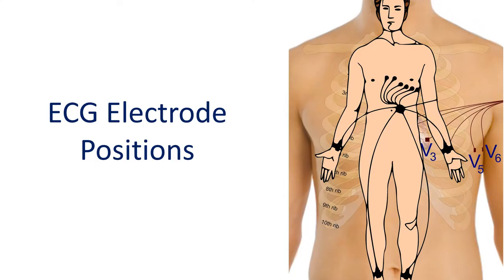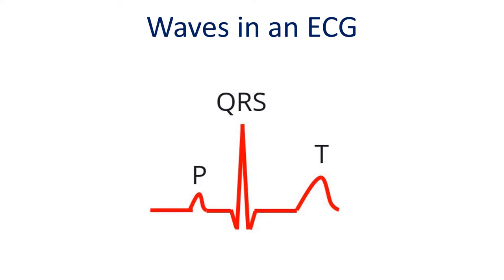ECG is recorded by placing multiple electrodes on designated parts of the body and connecting them to the ECG machine. Typically, 4 electrodes are connected to all 4 limbs and 6 electrodes are placed on the chest. The important waves seen in an ECG are P, QRS complex, and T wave.